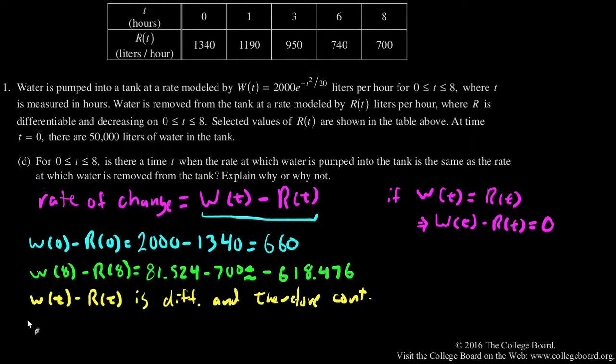We know that w of 0 minus r of 0 is 660. W of 8 minus r of 8 is negative 618.476.